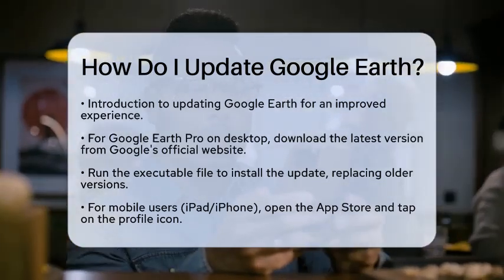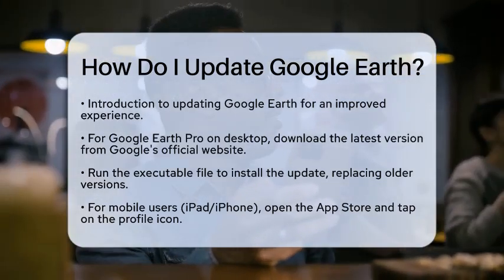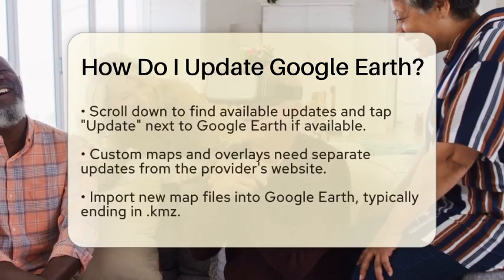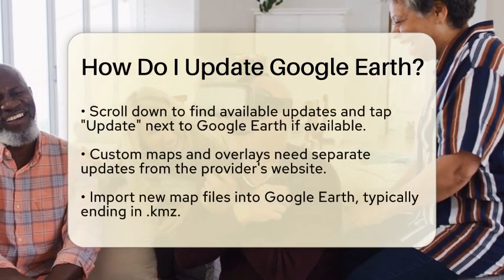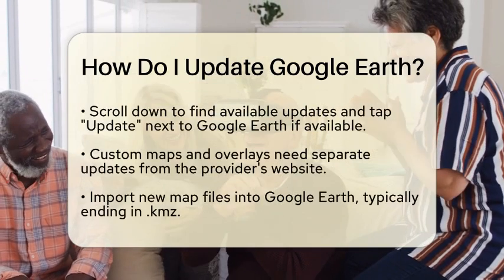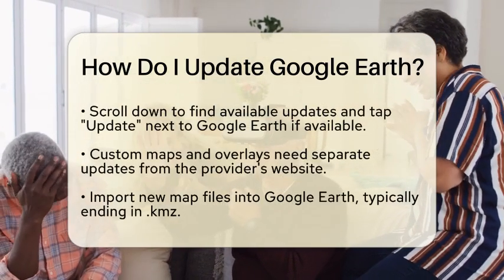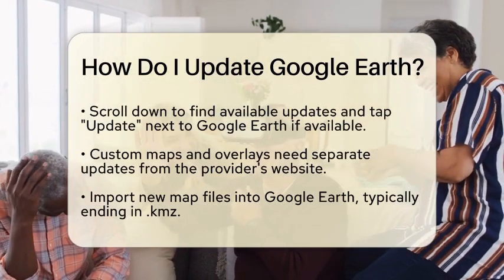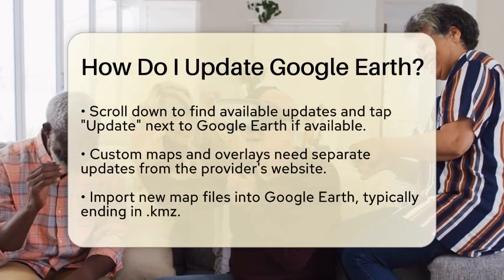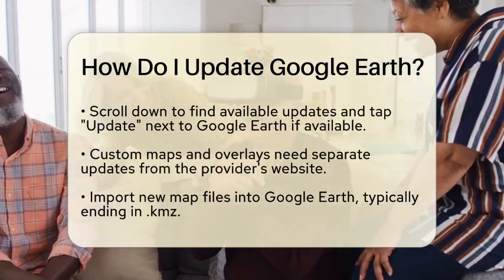Now, if you are using a mobile device like an iPad or an iPhone, updating Google Earth is just as simple. Open the App Store on your device and tap on your profile icon located in the top right corner. Scroll down to see the available updates and look for Google Earth. If an update is available, just tap Update next to the app.